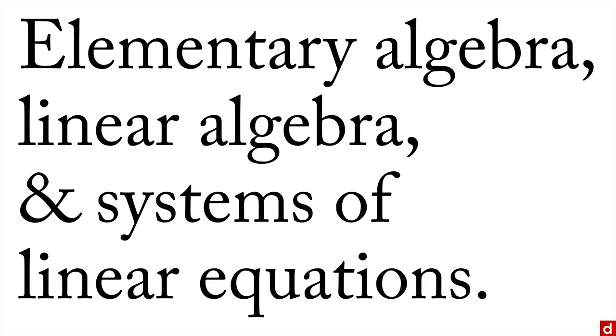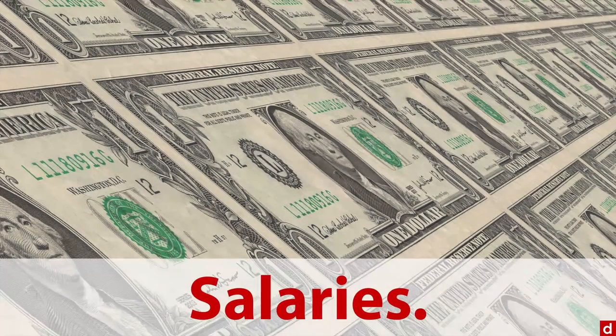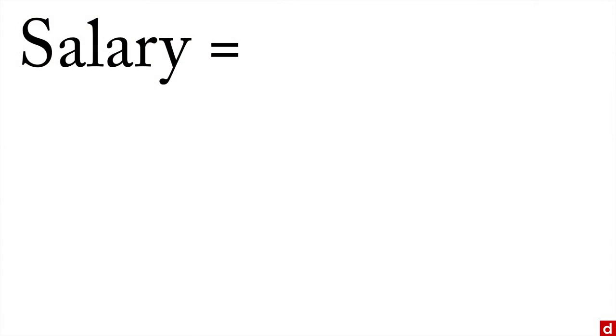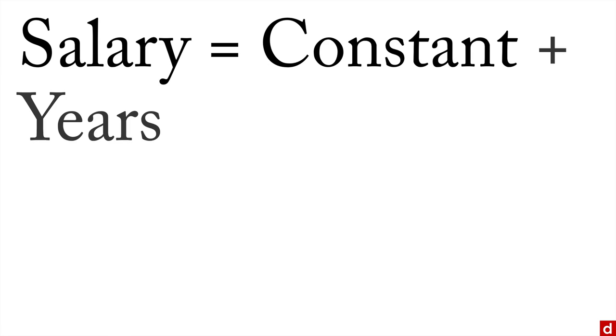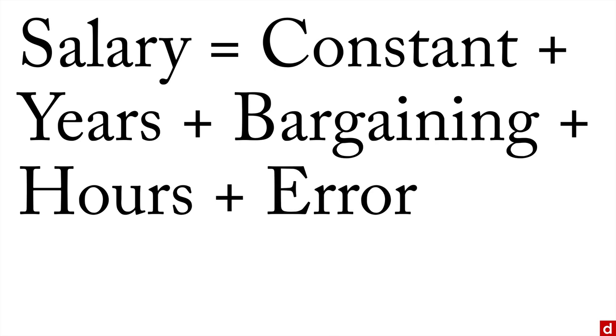But to put it into context, let's take an example of salaries. This is based on real data from a survey of the salary of people employed in data science. To give a simple version, the salary was equal to a constant, an average value that everybody started with. To that you added years, bargaining skills, and hours worked per week. That gives you a prediction. But because it wasn't exact, there's also some error to get to the precise value that each person has.